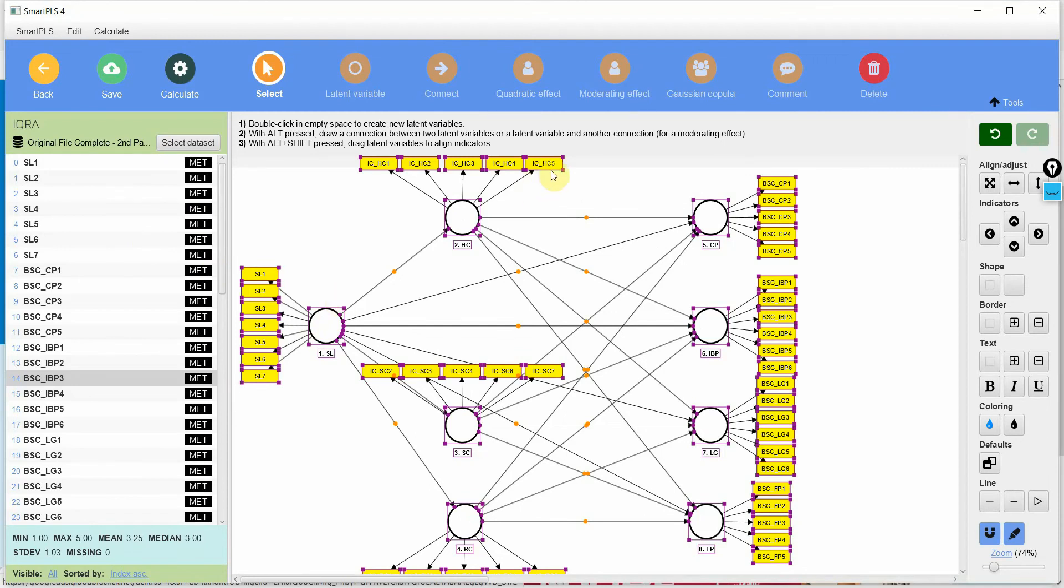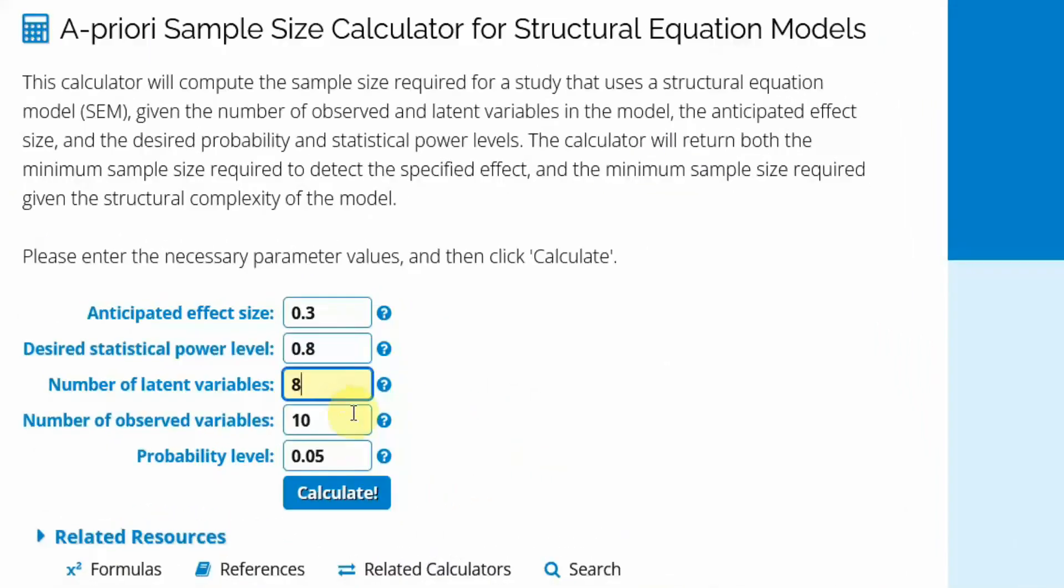So 7, 5, 12... [counting through all indicators] ...39 and 5, 44. So 44 indicators, observed variables. Now these observed variables help measure the latent variables. So 44.